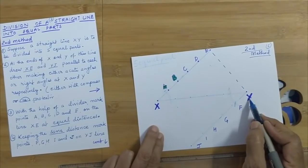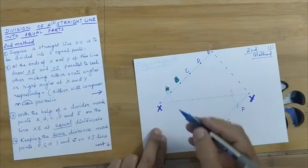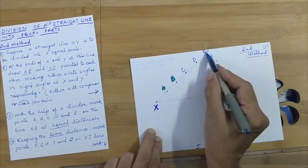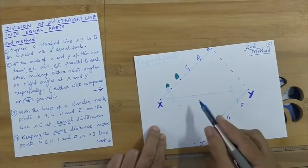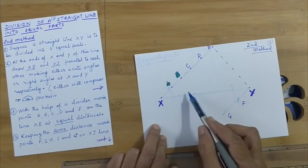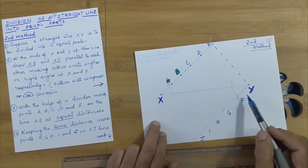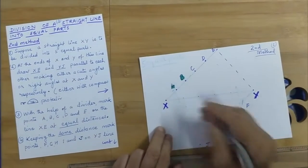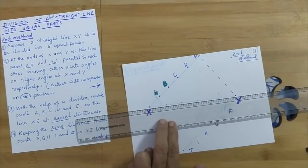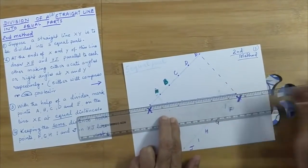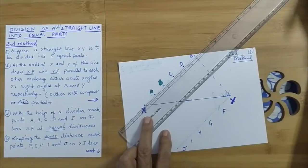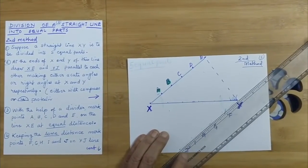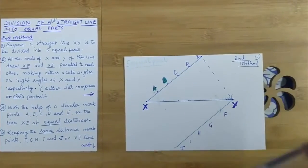At the ends X and Y of this line, draw XE and YJ parallel to each other, making either acute angles or right angles at X and Y respectively, either with a compass or with a protractor. This is line XY with an acute angle at X and the same acute angle at Y.